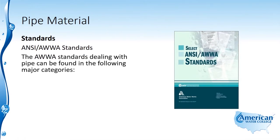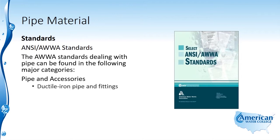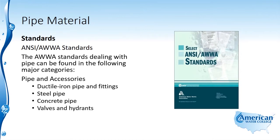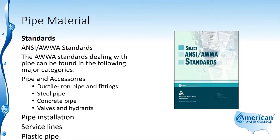The AWWA standards dealing with pipe can be found in the following major categories: pipe and accessories, which includes ductile iron pipe and fittings, steel pipe, concrete pipe, as well as valves and hydrants. Then there's pipe installation and service lines, as well as plastic pipe.